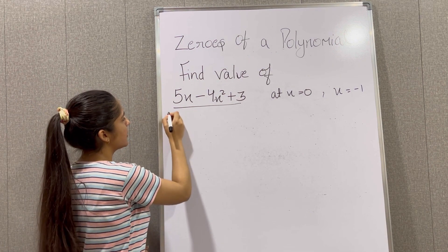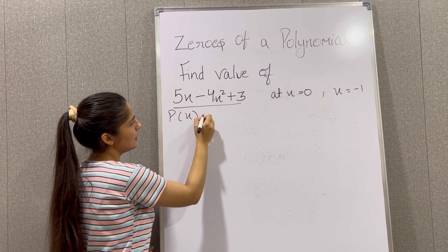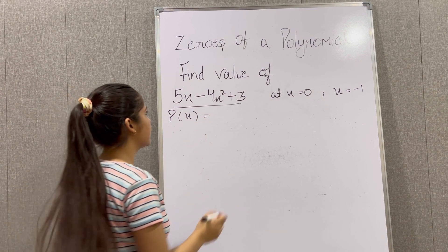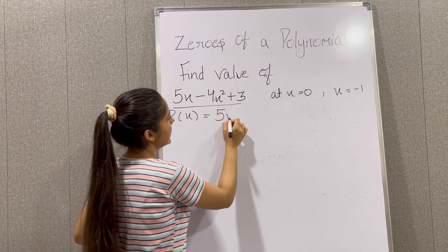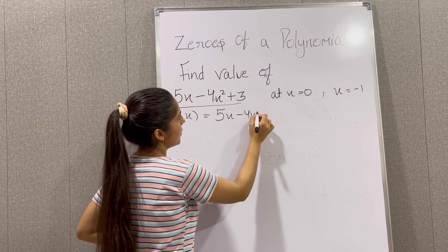First of all we are going to put x equals 0. So first of all we will write our polynomial P(x) equals 5x minus 4x squared plus 3.